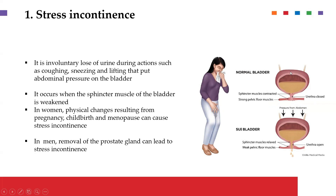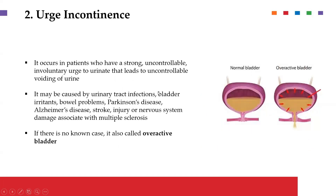With stress incontinence, we end up having loss of urine during actions that put pressure or stress on the bladder. These actions may include sneezing, lifting, coughing, or in the case of pregnancy, where the gravid uterus puts pressure on the bladder. If you remove this external pressure or stress, then chances are that we will regain the ability to control the bladder — it is simply due to external pressure being placed on the bladder.